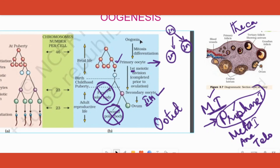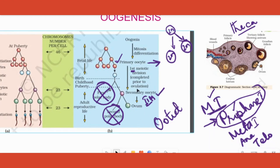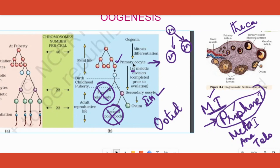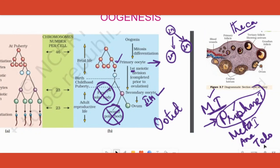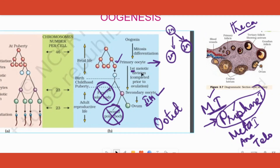Let's quickly recap: Oogonia inside the fetal ovary undergo mitosis to produce many primary oocytes. They all start meiosis 1 but do not complete it — they get stuck in prophase 1. The child is born, goes into puberty, and her first menstrual cycle starts. On day 14 she has to ovulate. Each time, one primary oocyte undergoes changes — forming primary follicle, secondary follicle, tertiary follicle, and Graafian follicle. The moment it is about to be released, it completes meiosis 1 to form a secondary oocyte and a first polar body. The first polar body is degenerated; the secondary oocyte is released, which we call the ovum.